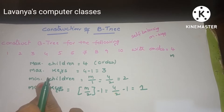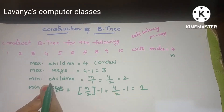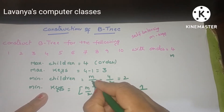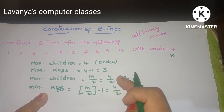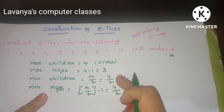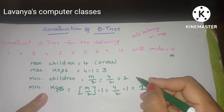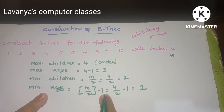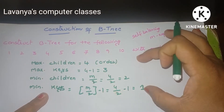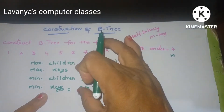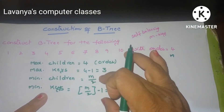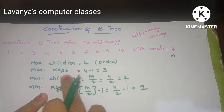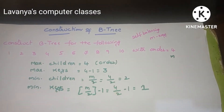Similarly, we require minimum values too. Minimum children equals M divided by 2. Order is 4, so 4 divided by 2 is 2. Minimum children is 2, and minimum keys is M divided by 2 minus 1, which is 1. To summarize: maximum children equals the order (4), and maximum keys equals order minus 1 (3).